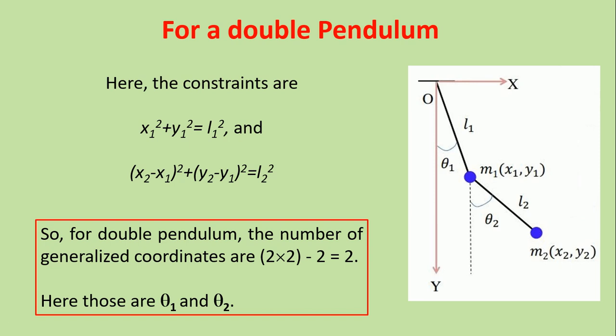So that is how we understand generalized coordinates. First, find how many constraints there are, then calculate the number of generalized coordinates accordingly. One key condition to keep in mind: the generalized coordinates must completely specify the state of the system. Thank you for watching.